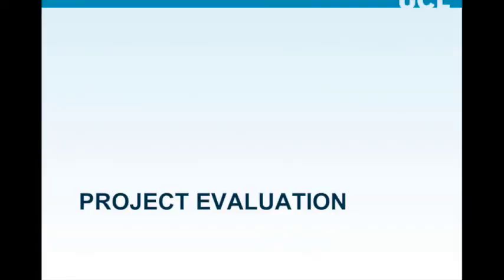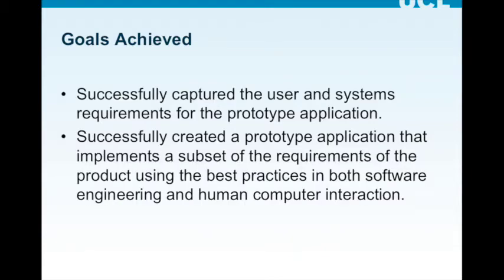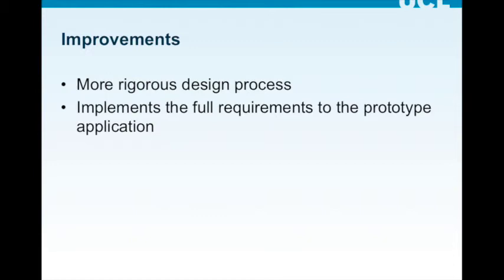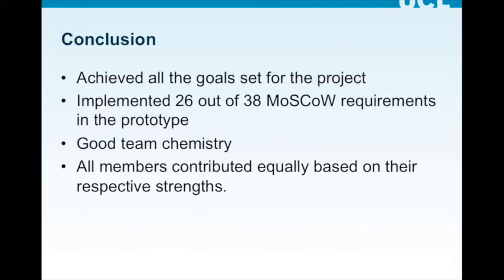Finally, our project evaluation. The goals we achieved in this project were successfully capturing the user and system requirements for the prototype application and creating a prototype that implements a subset of the requirements. The improvements we could make include a more rigorous design process such as empirical evaluation, and implementing the full requirements. In conclusion, we have achieved all the goals we set for the project, successfully implementing 26 out of 38 MoSCoW requirements. All members of the group contributed equally and to the best of their abilities. Thank you for listening.